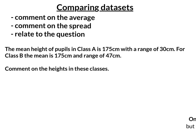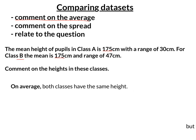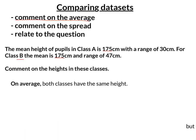So I've got to comment on the average. The mean is 175 for class A and also 175 for class B. So again, my first comment starts with 'on average,' and I've got: both classes have the same height.